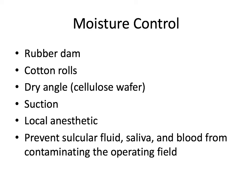Moisture control is done during both the preparation and restoration process. You can use rubber dam, cotton rolls, dry angle suction, and local anesthetic — if it contains epinephrine, it can also help prevent some bleeding. The goal of these measures is to prevent sulcular fluid, saliva, and blood from contaminating the working area.